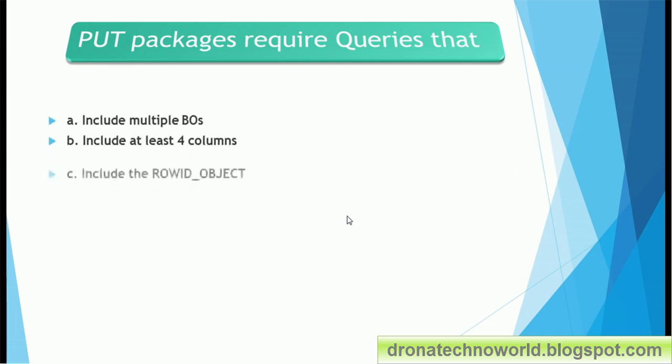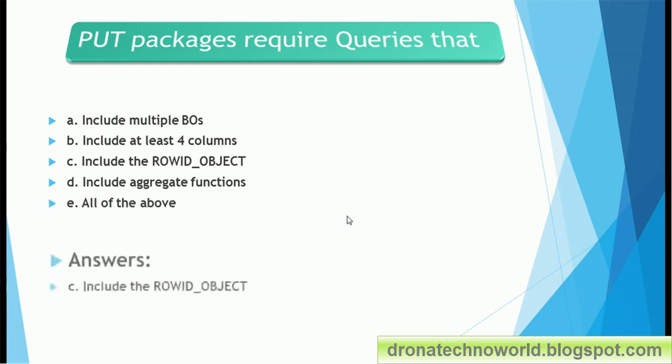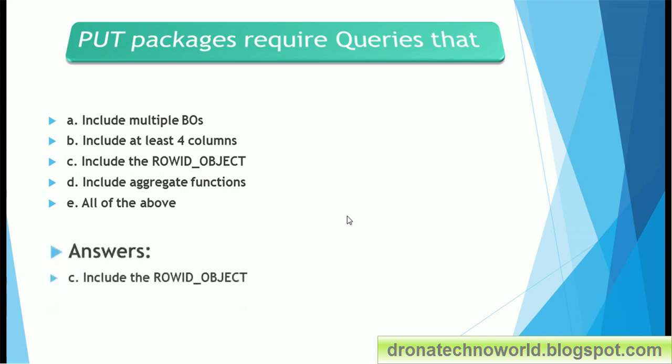Next: put packages require queries that — option A: include multiple base objects; option B: include at least four columns; option C: include the row ID object; option D: include aggregate functions; or option E: all of the above. The correct answer is option C — queries must include the row ID object.